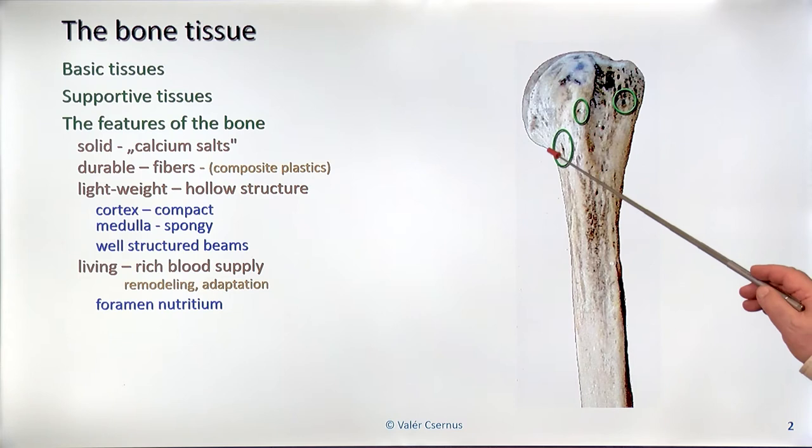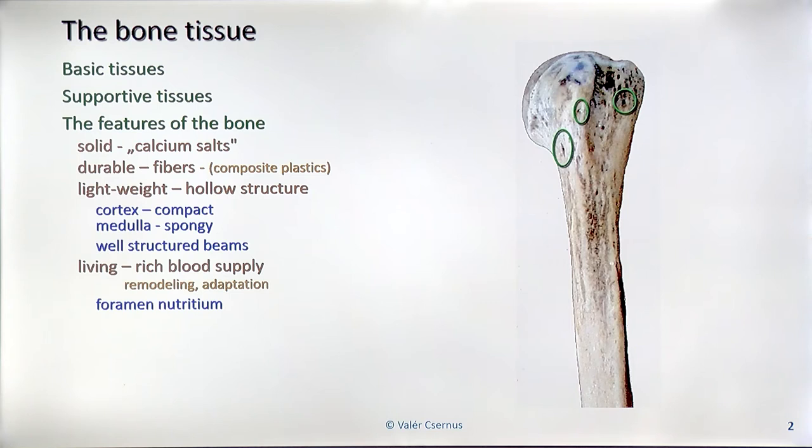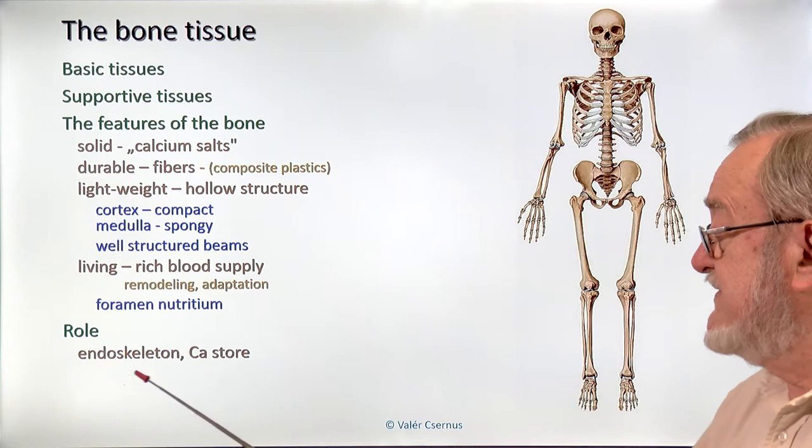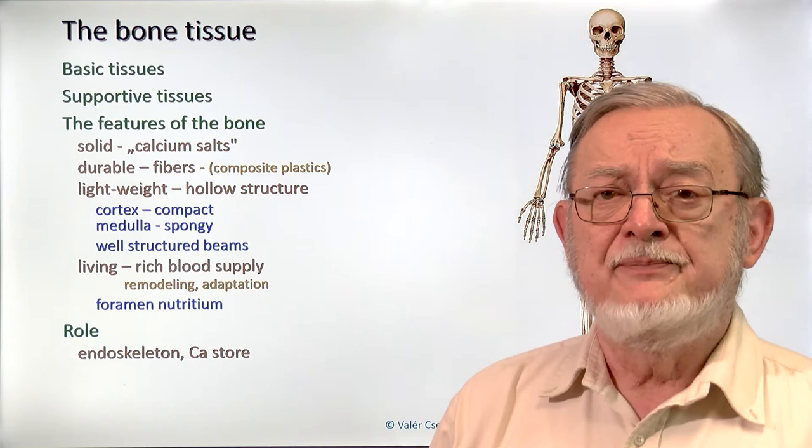In the bones, as you probably know from the dissecting room, we have openings called the foramen nutritium. These are the points where the supplying blood vessels enter the bone. The bones have two roles in our body: number one, they ensure the endoskeleton, which is the internal solid structure of our body.